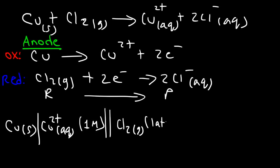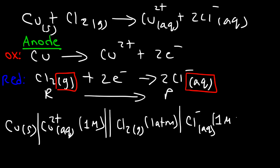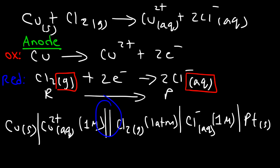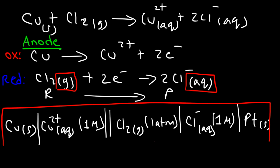We use a single vertical line to show the phase change from gas to aqueous, then write Cl⁻ in aqueous phase at 1 M. Another vertical line shows the phase change from aqueous to solid, and we use a platinum electrode. To summarize: use a single vertical line whenever phase changes between solid and aqueous or gas and aqueous, and use a double vertical line to separate one half cell from another. These examples show how to write cell notation for an electrochemical reaction.